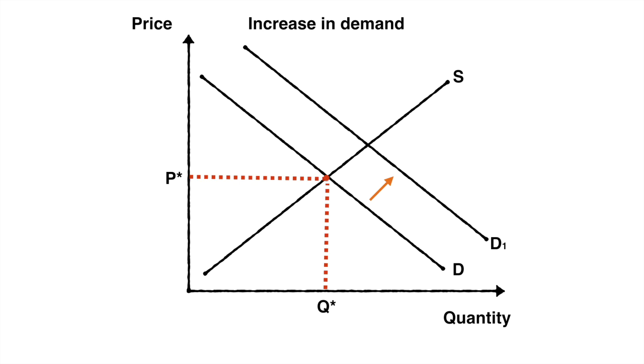The arrow demonstrates that D is the starting point and the new demand curve is D1. As demand shifts to the right and increases, equilibrium price rises from P star to P1 and equilibrium quantity increases from Q star to Q1.